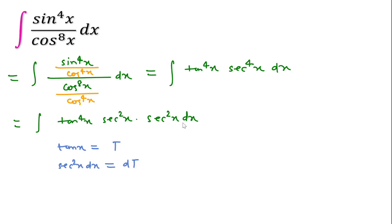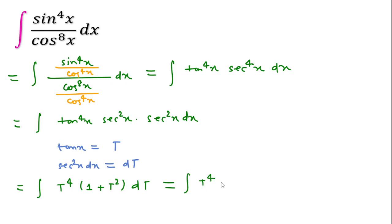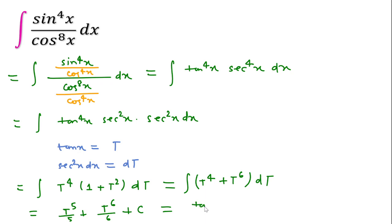So in place of sec²x dx I will put dt. We can write this integration as t⁴ and this sec²x can be written as 1 plus tan²x, which means 1 plus t². Expanding this gives t⁴ plus t⁶ dt, and this can be integrated as t⁵ over 5 plus t⁷ over 7 plus C. In place of t we write tan x, so the answer is tan⁵x over 5 plus tan⁷x over 7 plus C.